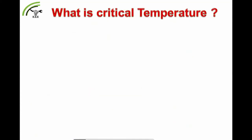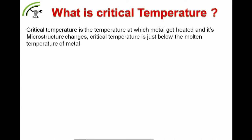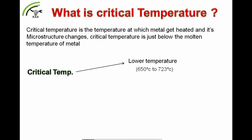Now let's understand what is critical temperature. Critical temperature is the temperature at which metal gets heated and its microstructure changes. Critical temperature is just below the molten temperature of metal. Critical temperature is divided into two categories: first, lower temperature having a range of 650°C to 723°C; and second, upper temperature of 800°C to 930°C. When steel is heated at the upper critical temperature range of 800°C to 930°C, its microstructure changes.